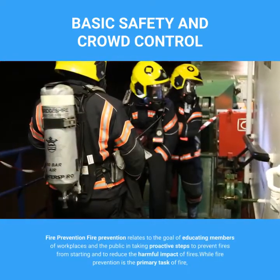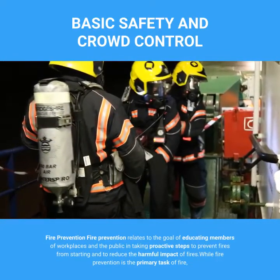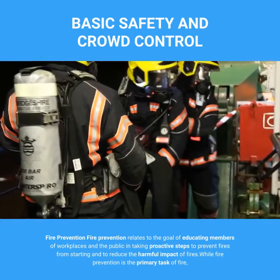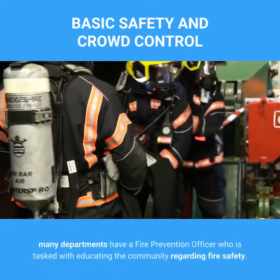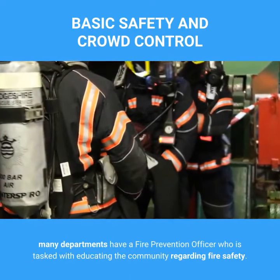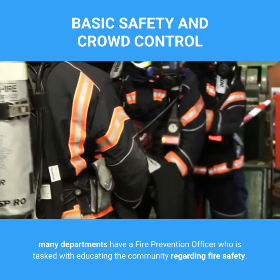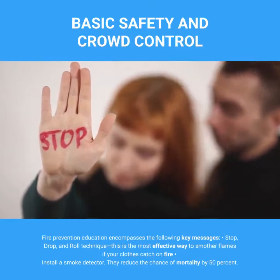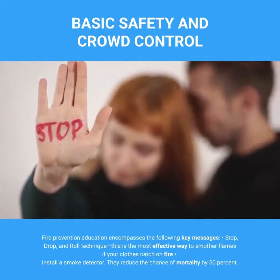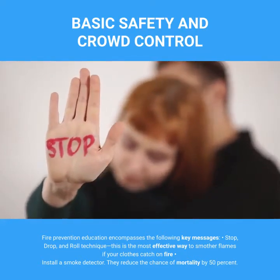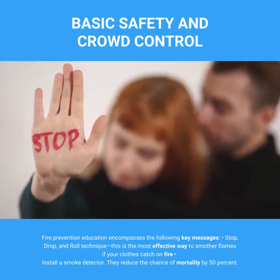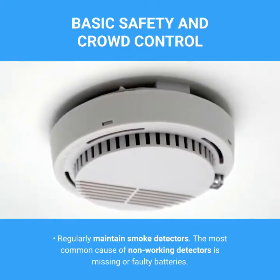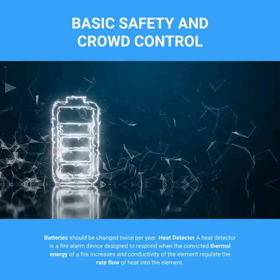Fire Prevention: Fire prevention relates to the goal of educating members of workplaces and the public in taking proactive steps to prevent fires from starting and to reduce the harmful impact of fires. Many departments have a fire prevention officer tasked with educating the community regarding fire safety. Key messages include the stop, drop, and roll technique — the most effective way to smother flames if your clothes catch fire. Installing a smoke detector reduces the chance of mortality by 50%. Smoke detectors need to be regularly maintained; the most common cause of non-working detectors is missing or faulty batteries, which should be changed twice per year.